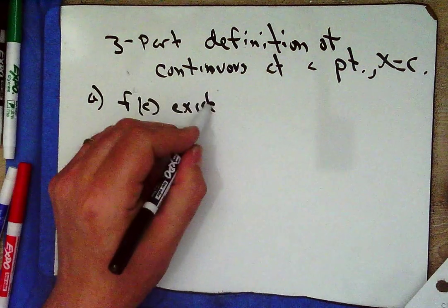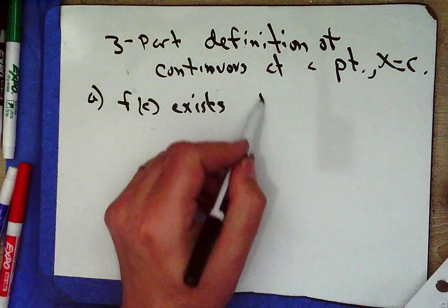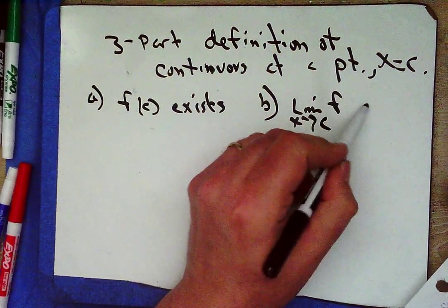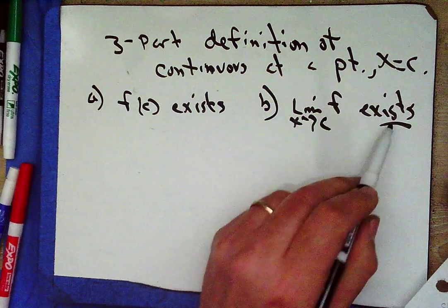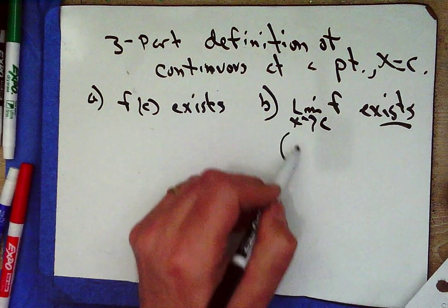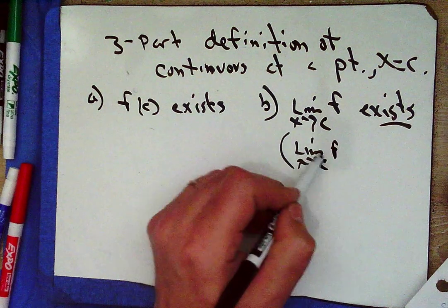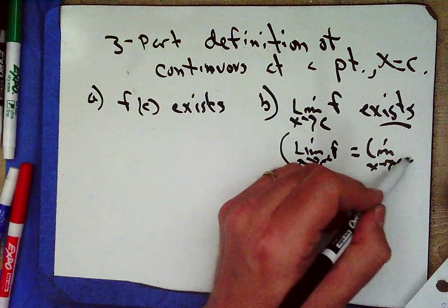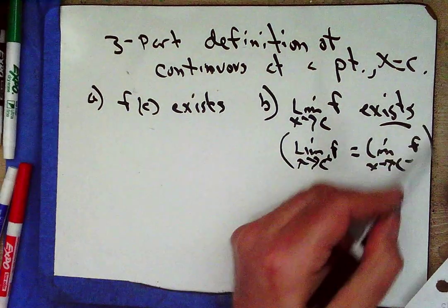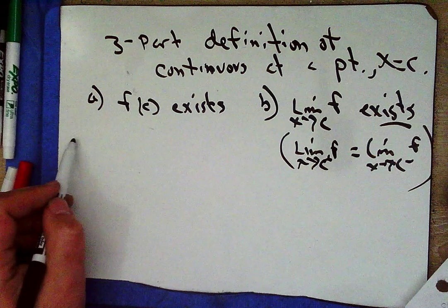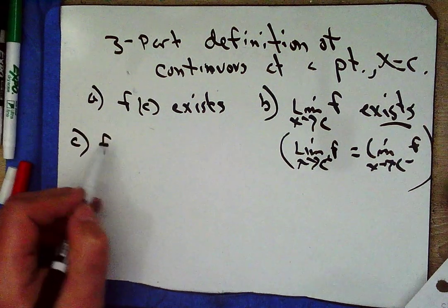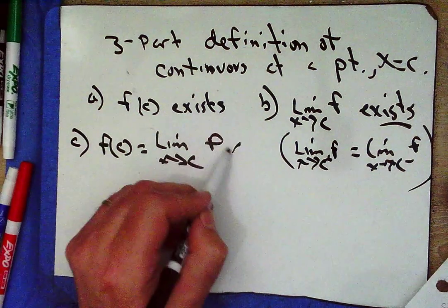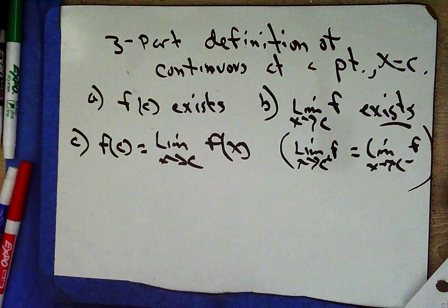The first part: f of c exists. Second part: the limit as x approaches c of f of x exists, which implies the limit from the positive side equals the limit from the negative side. Third part: f of c must equal the limit as x approaches c of f of x.